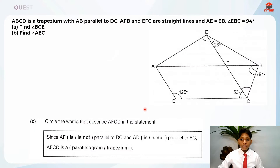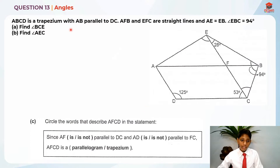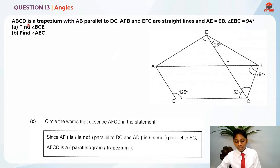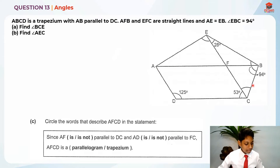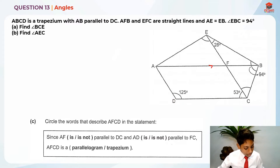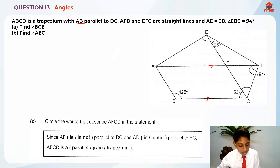Okay, this is question 13 and it is testing us on angles. Let's read the question first. A, B, C, D is a trapezium. That means that these two lines are parallel to each other — AB is parallel to DC.